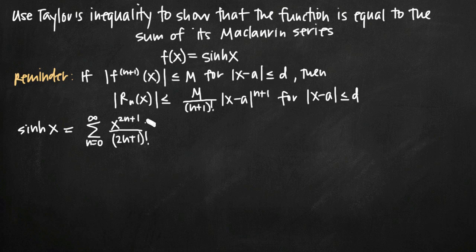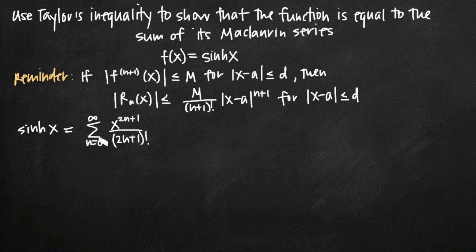You can derive it by creating a table for the Taylor or Maclaurin series, writing out n, f_n of x, and f_n of 0 — because remember we're talking about the Maclaurin series, which is the Taylor series centered at 0, with a equals 0. When you write out the Maclaurin series representation of that expanded series, you get x to the (2n+1) over the quantity (2n+1) factorial.